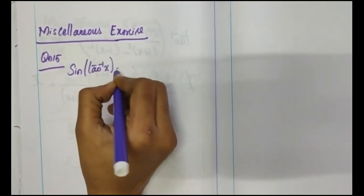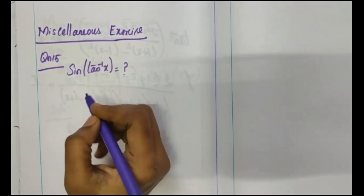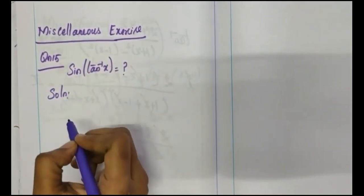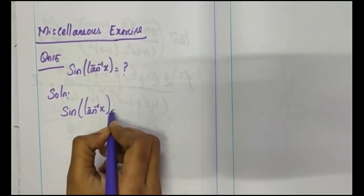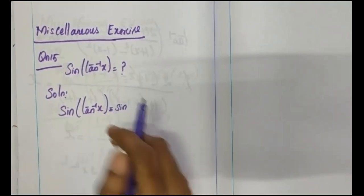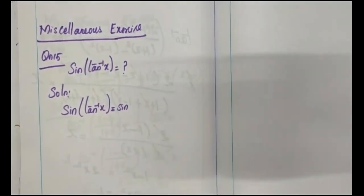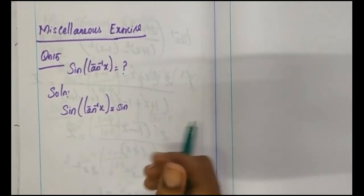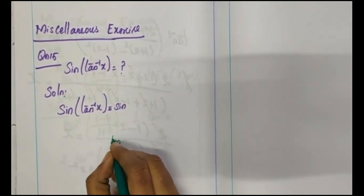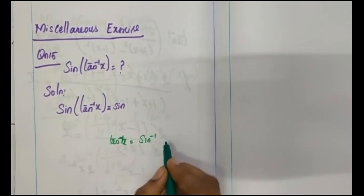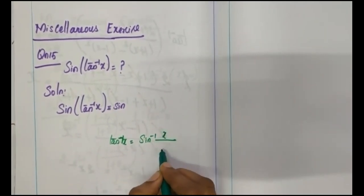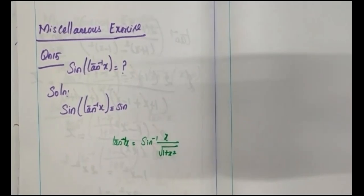Sine of tan inverse x — to solve this, we rewrite tan inverse x using the formula: tan inverse x is equal to sin inverse of x divided by root of 1 plus x squared. This is the key formula.